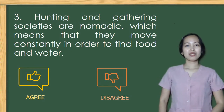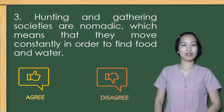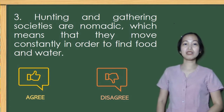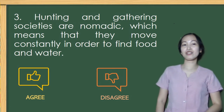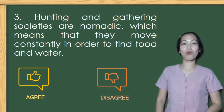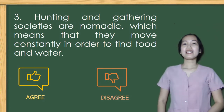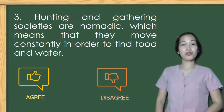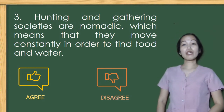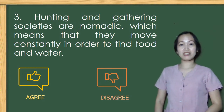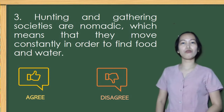Number 3. Hunting and gathering societies are nomadic, which means that they move constantly in order to find food and water. Agree is the correct answer. The majority of the members in this society spend their time looking for food.